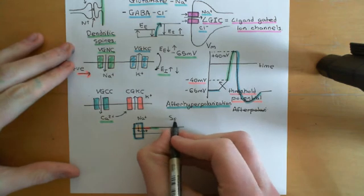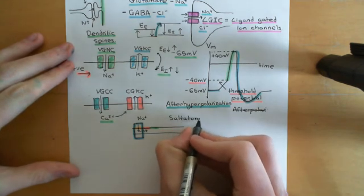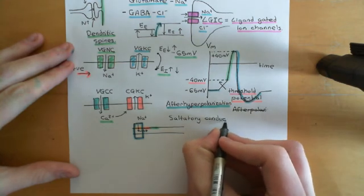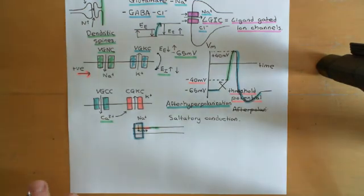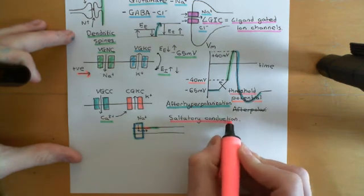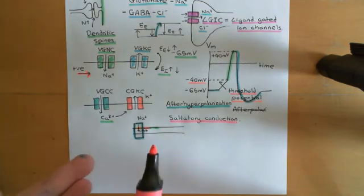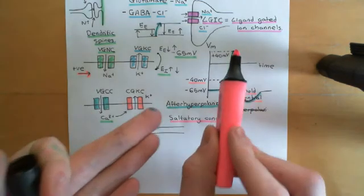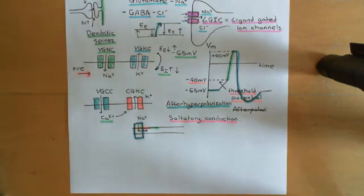Action potentials are an example of saltatory conduction — that's a key phrase. People often use saltatory conduction interchangeably with action potentials, and that's not quite right. Saltatory conduction is more general than an action potential. Action potential refers to this specific phenomenon — this specific disturbance in the electrical potential difference across the cell membrane which is capable of propagating along the cell membrane. Saltatory conduction is a more general concept.